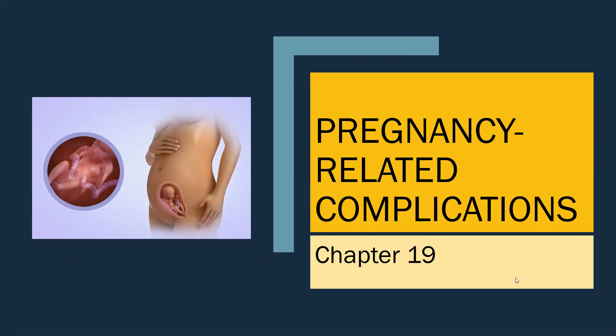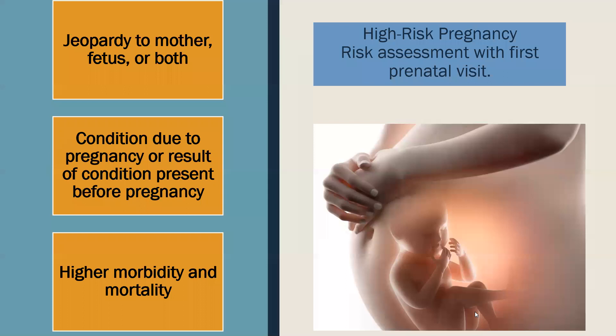Today we're going to be covering pregnancy-related complications, with some selected health conditions mixed in. If you're following along in the Riki Kyle book, we'll be looking at chapter 19 and a little bit of chapter 20. When we talk about pregnancy complications, we're looking at conditions that result in a high-risk pregnancy, and we start this risk assessment with the first prenatal visit. These conditions cause jeopardy to the mother, fetus, or both, and they increase morbidity and mortality rates.